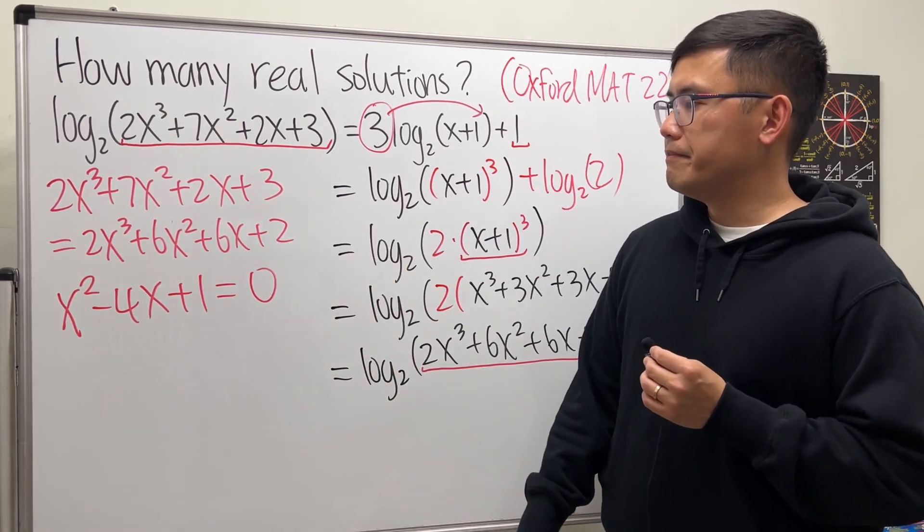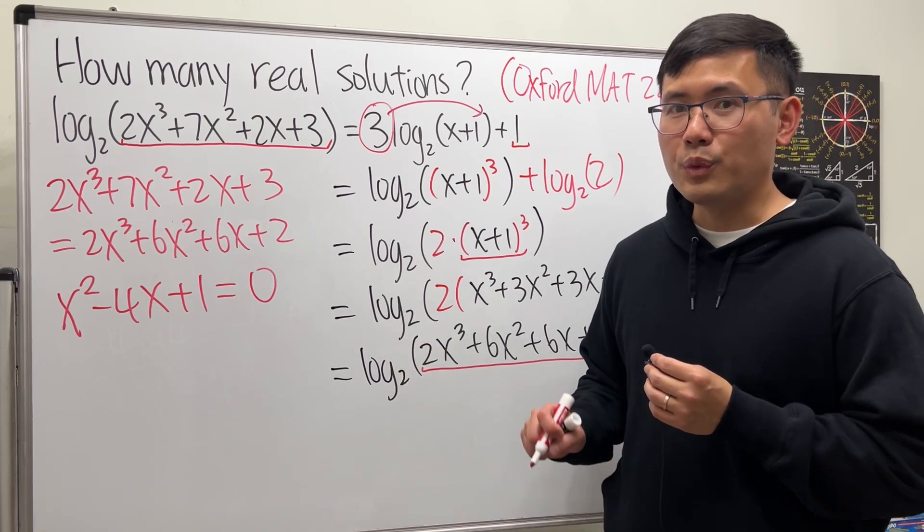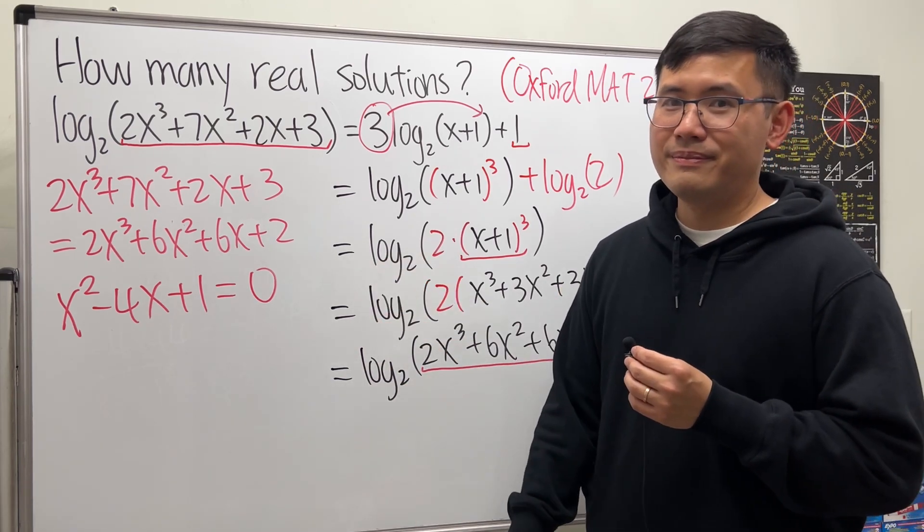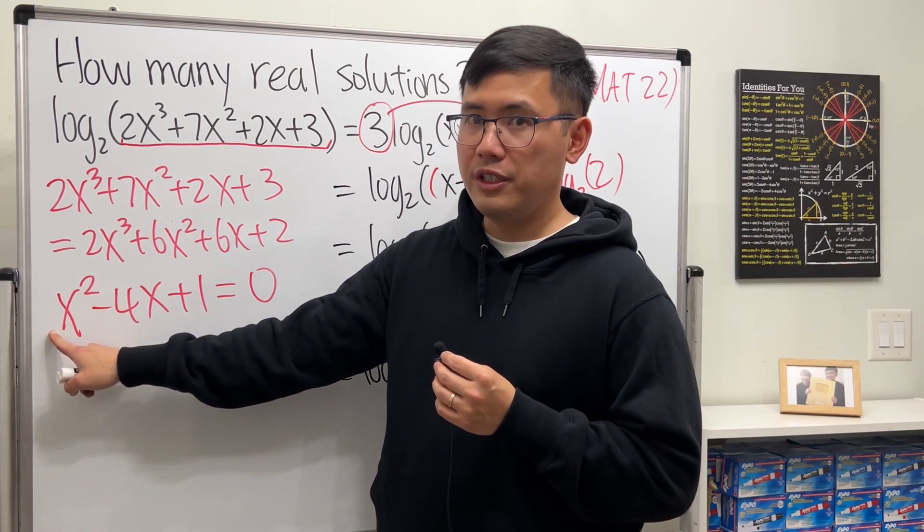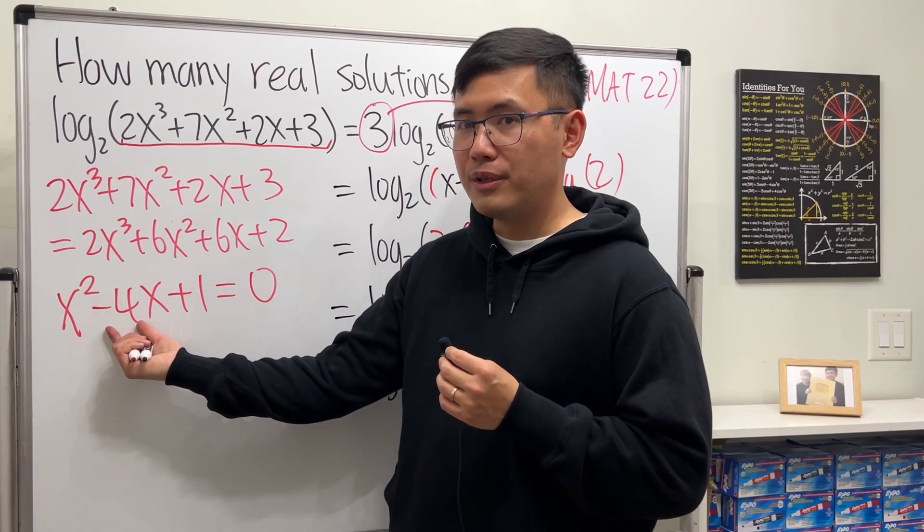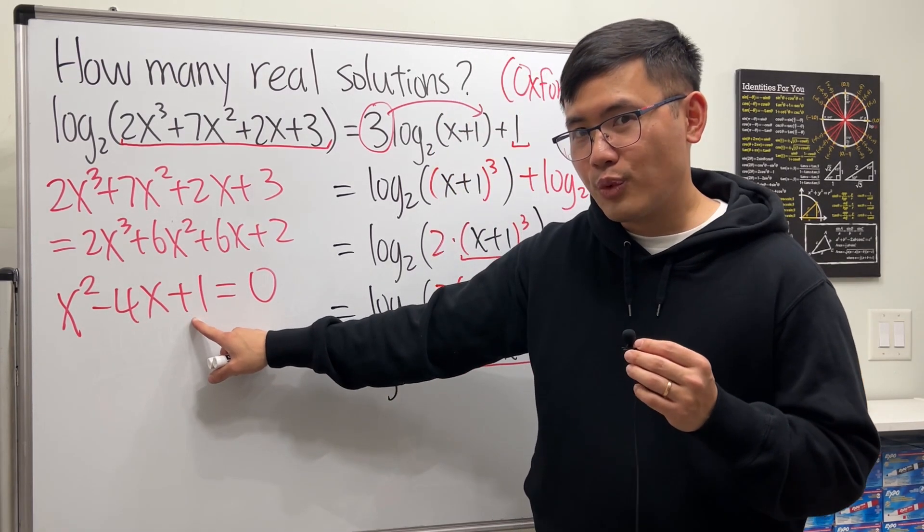Right here we have a quadratic equation, we can totally solve that. Why don't we just solve this by using completing the square, because the coefficient here is 1 already. And this is an even number and this is a whole number, so completing the square will be faster.